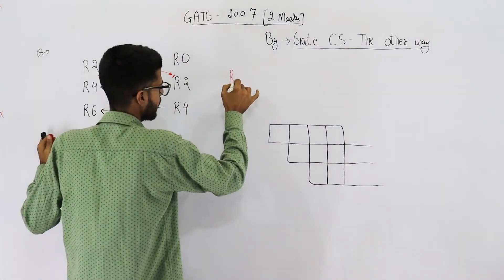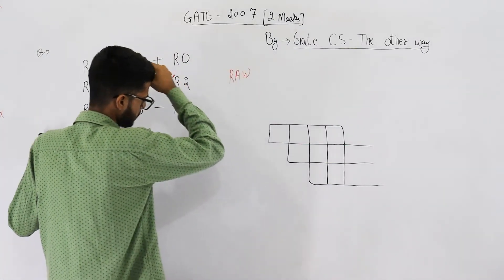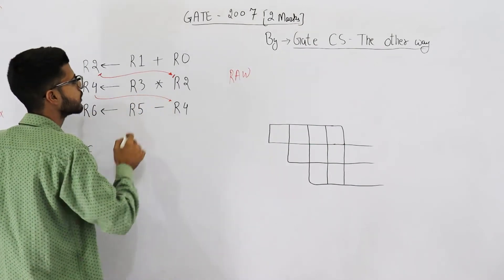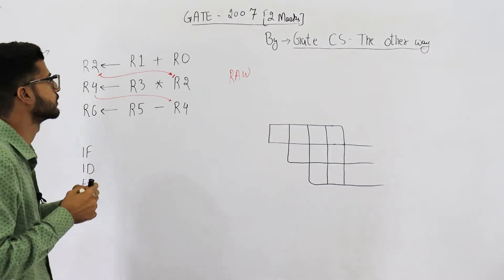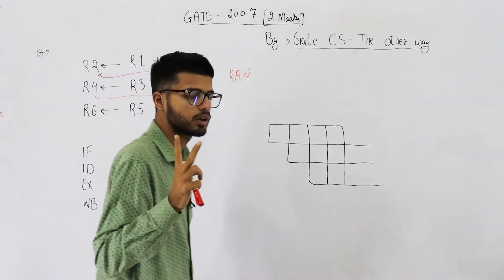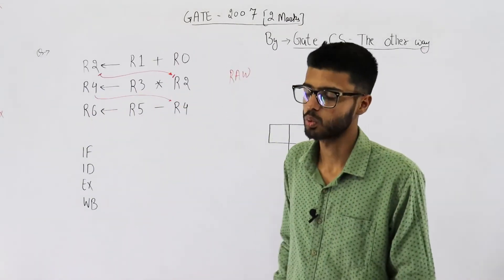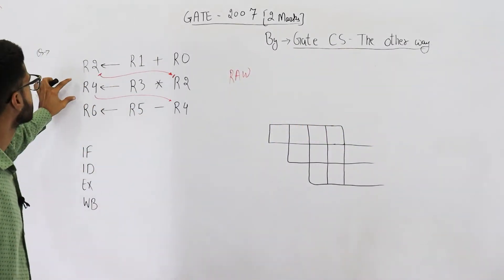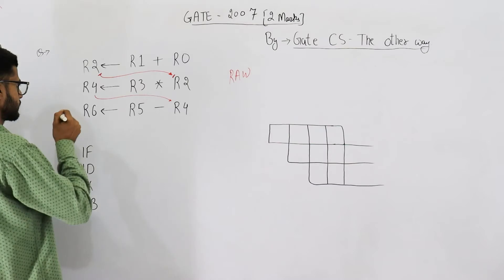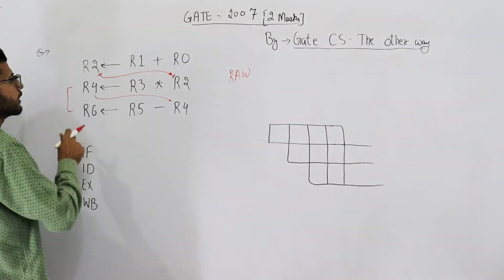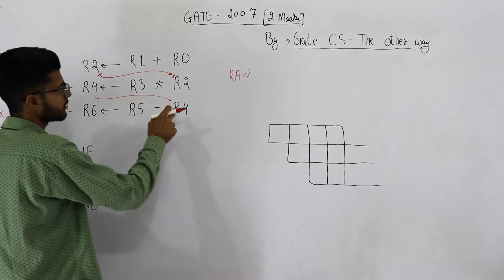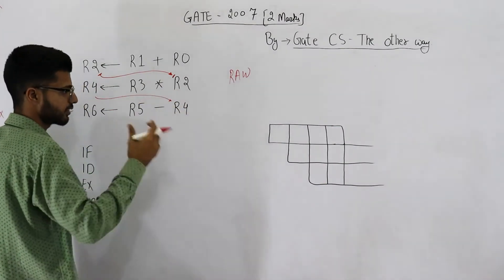This is R2 and this is also R2, so here we have a dependency, that is specifically of RAW type. Similarly this is R4 and this is R4, so here also we have a dependency. There are in total two dependencies in the given code.